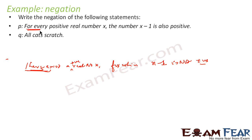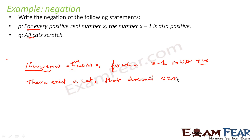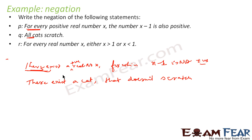Similarly, consider the statement: all cats scratch. The negation will be: there exists a cat which doesn't scratch. For the statement: for every real number x, either x is greater than 1 or x is greater than 1 — the negation will be: there exists a real number x for which that condition is false.